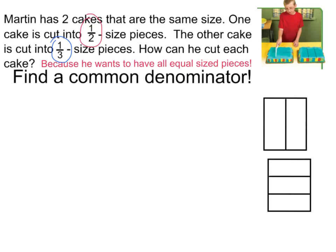Right now they don't. This one has two parts. This one has three parts. We need to find a common denominator so they have equal size pieces. So what we do is find our multiples of each of my denominators. Let's look at one-third and list my multiples of my denominator.